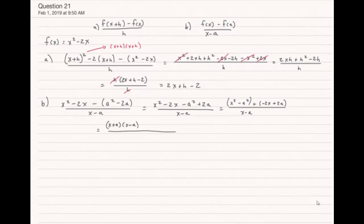So can I factor something out of the second group to get me to x - a? And I think I can. I think I can factor out a -2, and when I do that I get (x - a).